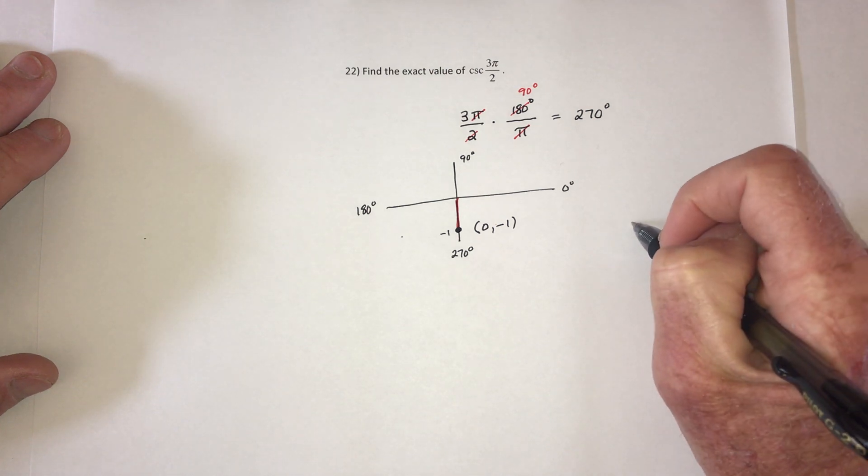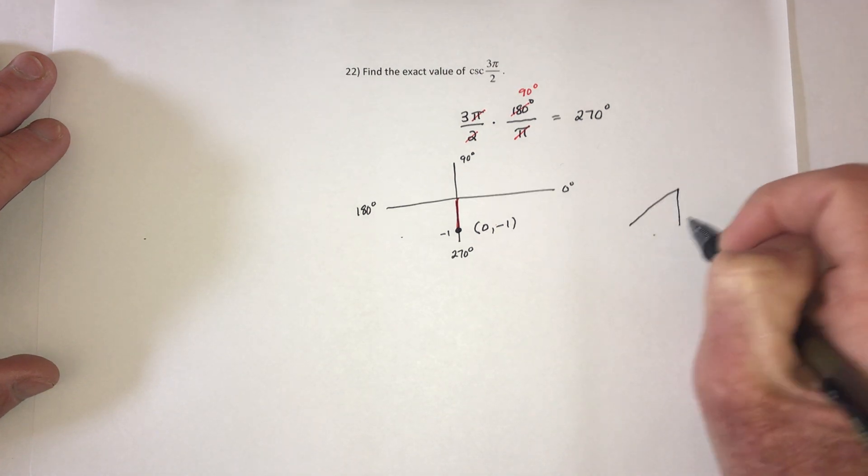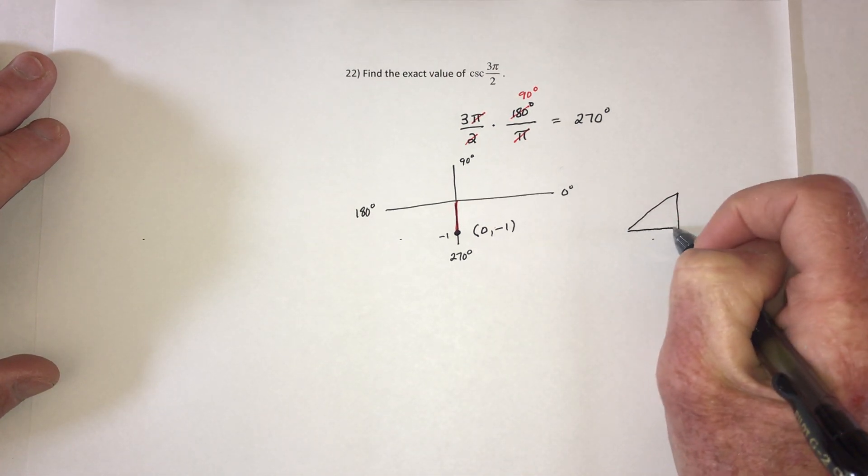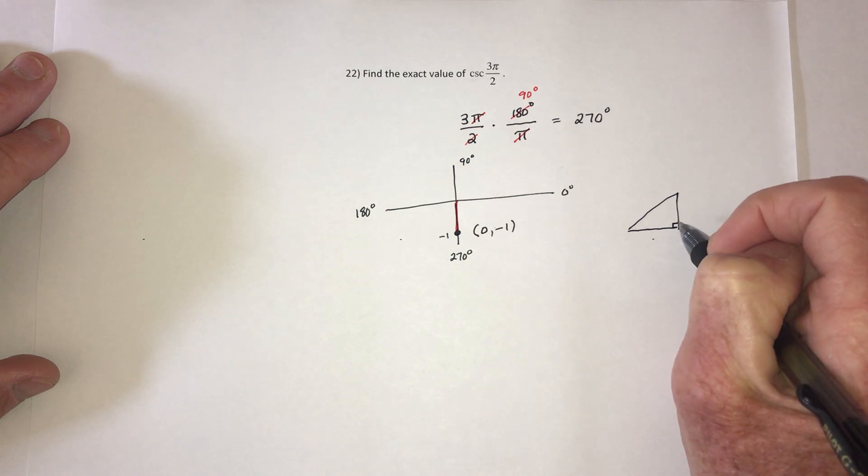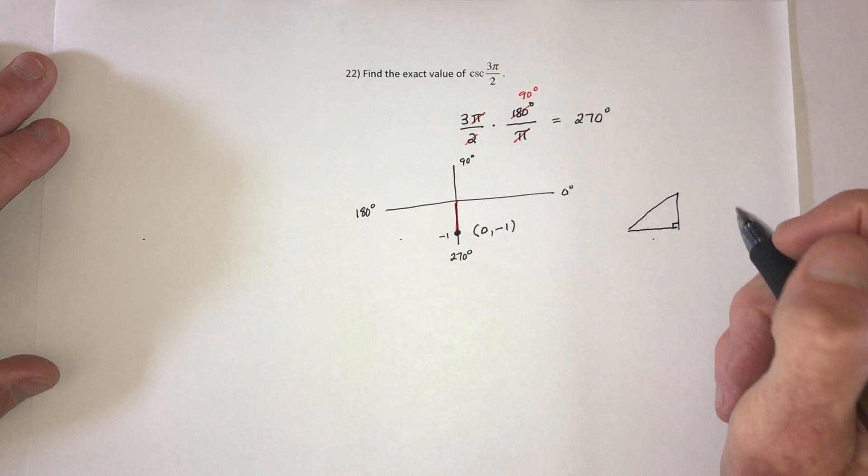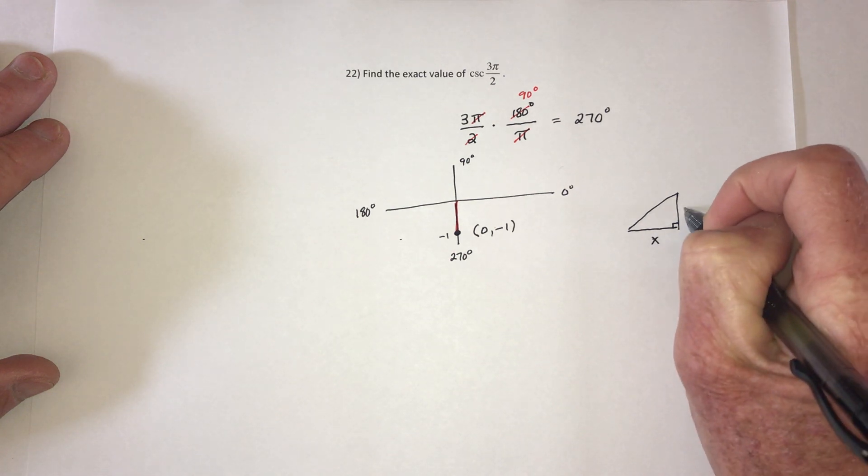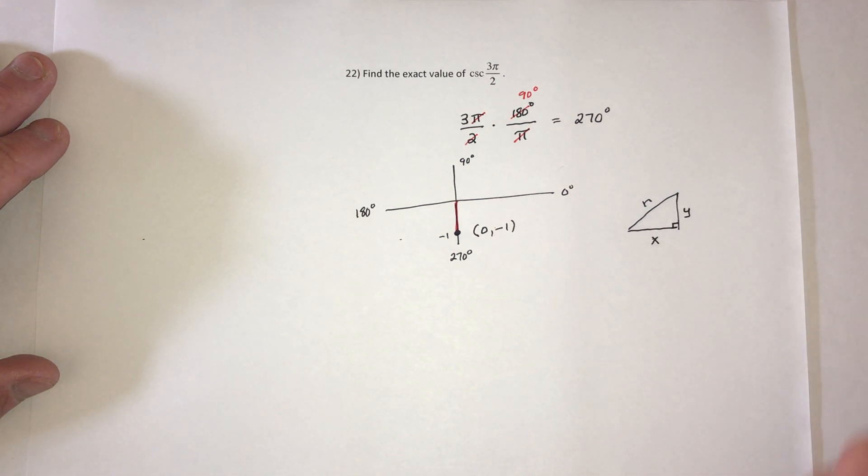Now when you have right triangle trigonometry, you could use opposite and adjacent and all of that. You could also say this is x, this is y, and this is r.